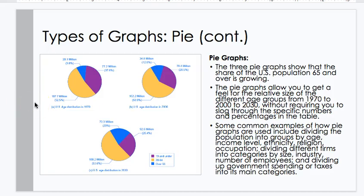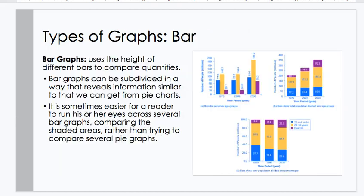Continued, the three pie graphs show that the share of the U.S. population, 65 and over, is growing. The pie graphs allow you to get a feel for the relative size of the different age groups from 1970 to 2000 to 2030, without requiring you to slog through the specific numbers and percentages in the table. Some common examples of how pie graphs are used include dividing the population into groups by age, income level, ethnicity, religion, occupation, dividing different firms into different categories by size, industry, number of employees, and dividing up government spending or taxes into its main categories.